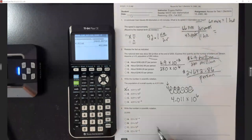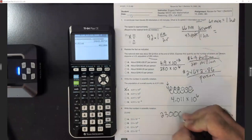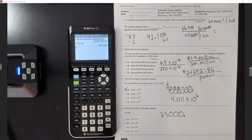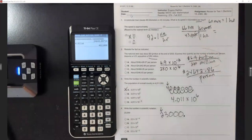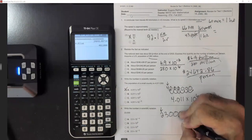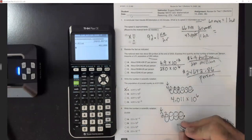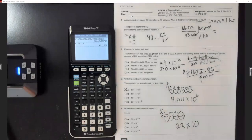Number four: write this number in scientific notation. The decimal is behind the last zero, so we need to move it behind the first non-zero number, which is 2. We move it 1, 2, 3, 4 times — so that gives us 2.3 times 10. Since we moved it left four units, the exponent is a positive 4.